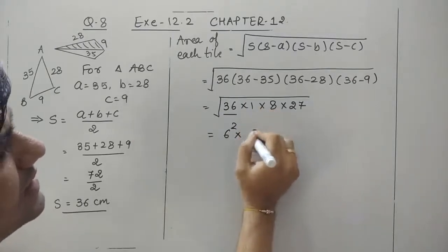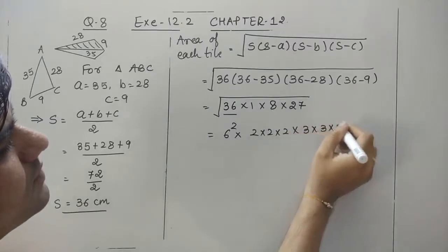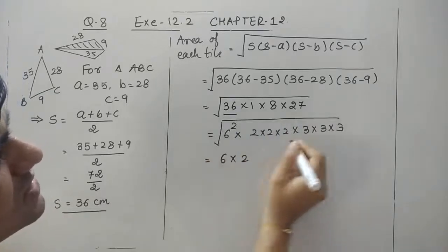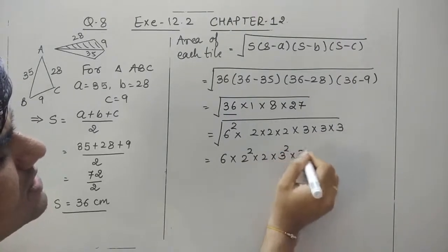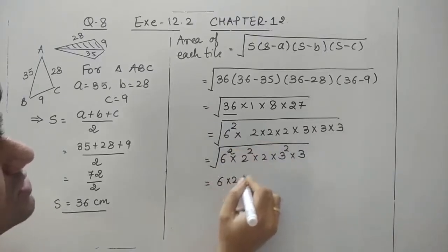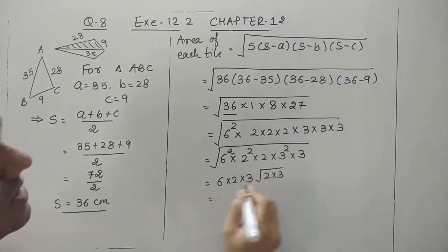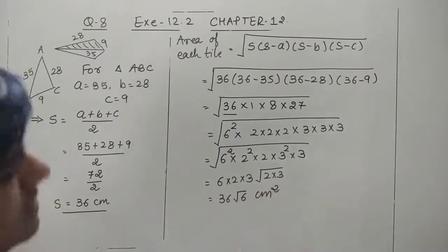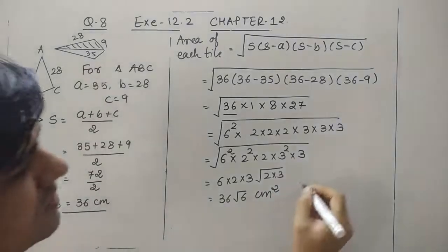Breaking into prime factors: 1 is as it is, 8 = 2×2×2, and 27 = 3×3×3. Taking out the square root: 36 gives 6 outside, from 8 we get 2 squared times 2 so 2 outside with 2 remaining, from 27 we get 3 squared times 3 so 3 outside with 3 remaining. This gives area = 36√6 centimeters square.